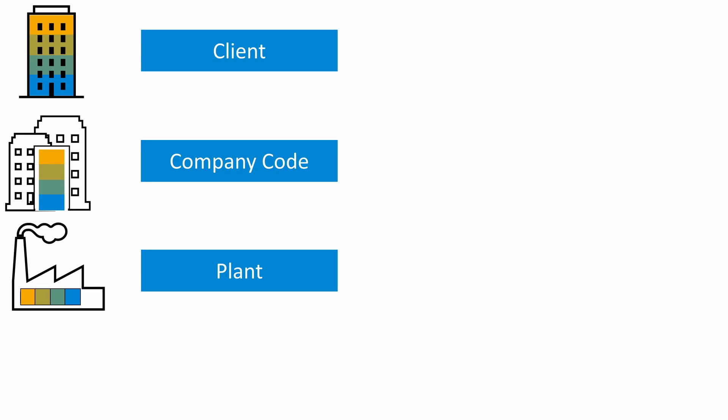Plant is the organizational unit within logistics. It represents the enterprise from the viewpoints of production, procurement, plant maintenance, and material planning. Plant represents various entities within a company such as manufacturing facility, central issuing storage location, regional sales office, corporate headquarters, and maintenance location.